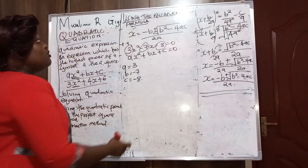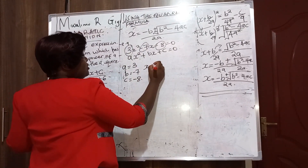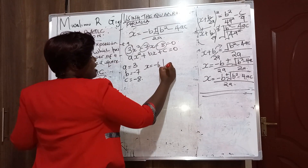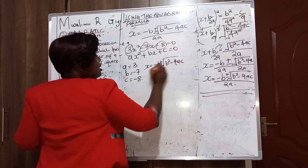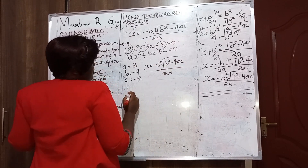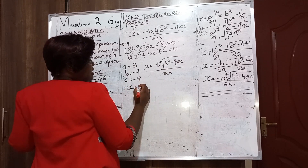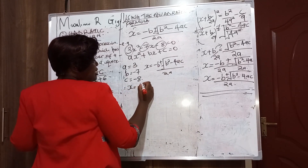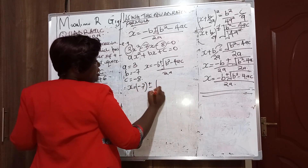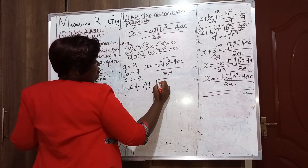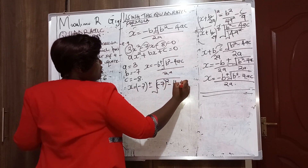We can now use the quadratic formula. Substituting: x equals negative b, which is negative of negative 7, plus or minus the square root of b squared — that is negative 7 squared — minus 4 times a, which is 3, times c.